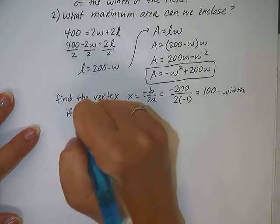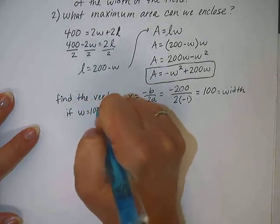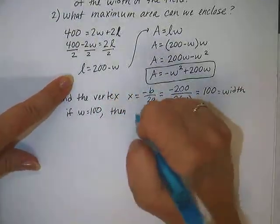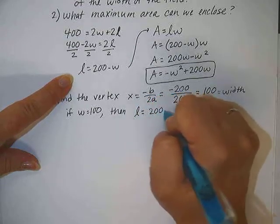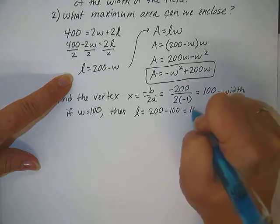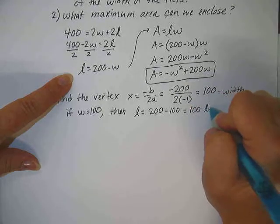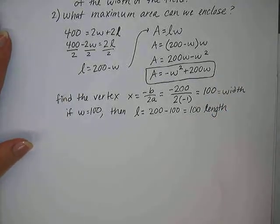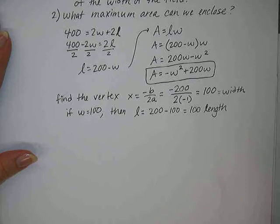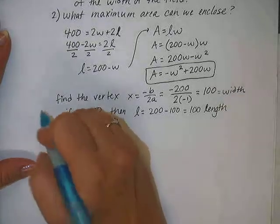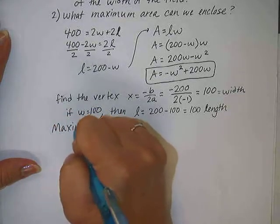Okay, well if the width of the rectangle is 100, what will the length have to be? If width equals 100, then based on this formula that we were just using a few minutes ago, length will have to be 200 of fence minus 100 for the width, leaving 100 for the length. The maximum area that can be enclosed just happens to require a rectangle that is actually a square, where the length and the width are equal.